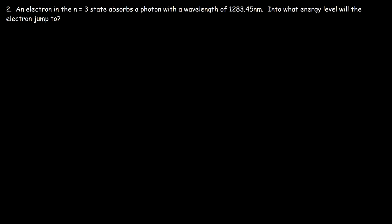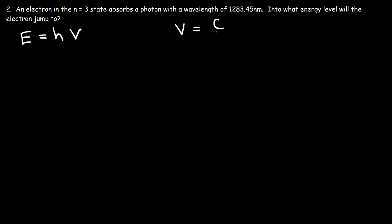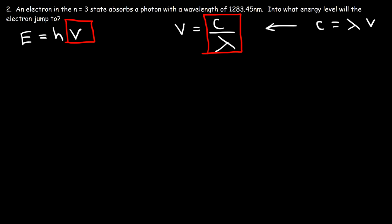Problem 2: an electron in the n=3 state absorbs a photon with a wavelength of 1283.45 nanometers. What energy level will the electron jump to? First we need to calculate the photon's energy from the wavelength. Since E = hf and f = c/λ, we can write E = hc/λ. Replace nm with 10⁻⁹ meters to get the energy of the photon.